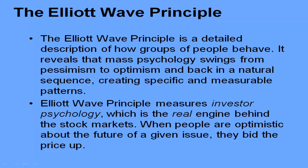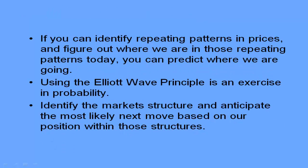Elliott Wave is basically describing to us how a group of people behave in the stock market. When we think about the Elliott Wave Principle, it is basically trying to explain how group behavior takes place in the stock market, and it reveals to us the psychology of a group of people in the market. We are looking at certain specific and measurable patterns which come out in the stock market through price, and those patterns explain the mass psychology of people inside the stock market.